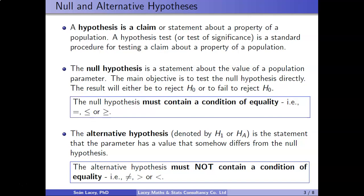It's very rare that someone makes a claim using the word 'equals' directly. More often the wording used will be 'no difference' — for example, 'there is no difference between the placebo and treatment group' — which maps to the equals symbol. 'The same' also maps to equals. 'At most' maps to less than or equal to, and 'at least' maps to greater than or equal to. If a claim involves any condition of equality, it must be the null hypothesis, and by default the opposite becomes the alternative hypothesis.